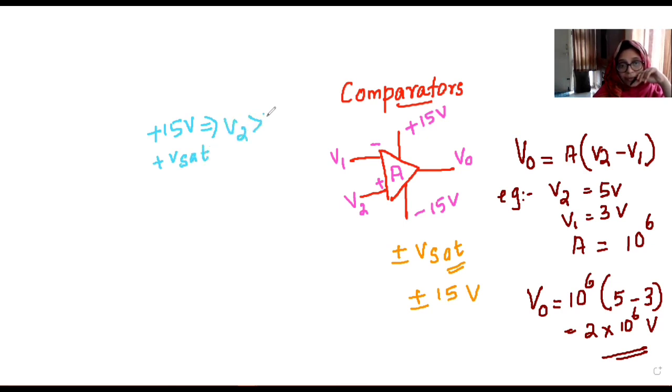Plus 15 volt means positive Vsat when V2 greater than V1. When V2 is greater than V1, we get plus 15 volt. This is minus 15 volt, that is minus Vsat. It is the opposite condition, that is V2 less than V1, or V1 greater than V2. We will see the same condition. Plus 15 volt saturation when V2 will be greater than V1. So our output will be plus Vsat, that is plus 15 volt.